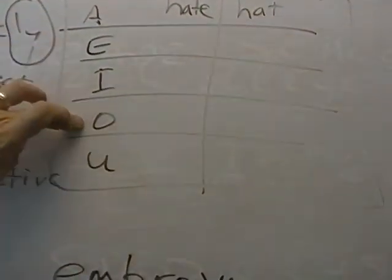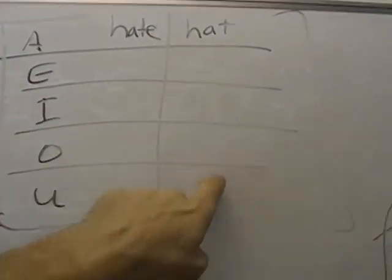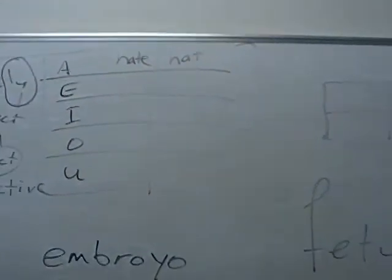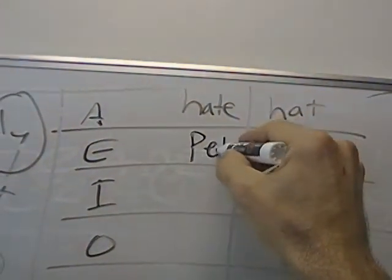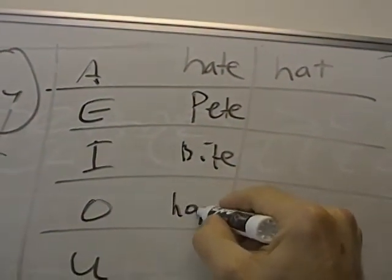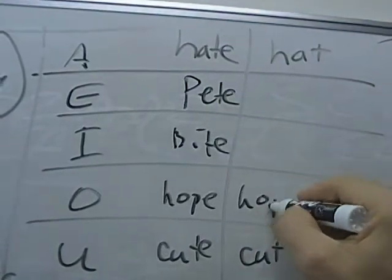For pronunciation, you can go A, E, I, O, U, and then there are other sounds. For example, we can say hate, Pete, bite, hope, and cute. We just take away the E...